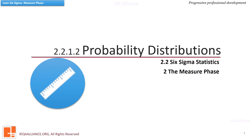Welcome back. The objective of this lesson is to define and describe the various distributions as they apply to statistical process control and probability. Normal, Binomial, Poisson, Chi-square, Student's t, and F distributions are discussed in brief here.